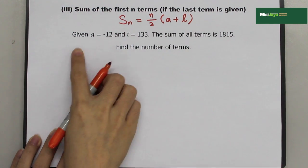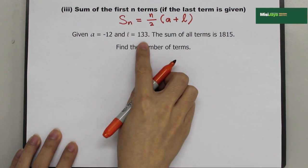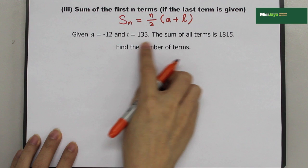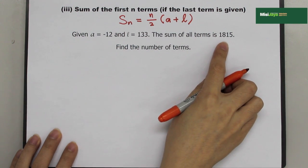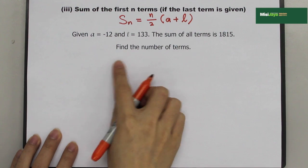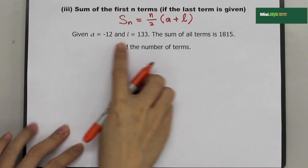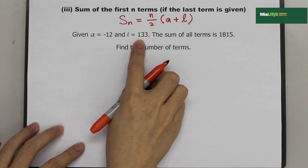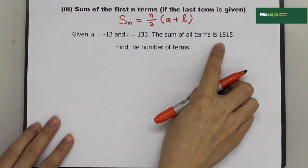Example: given A is negative 12 and L is 133, and the sum of all terms is 1815, find the number of terms. Here A and L are given, and SN is 1815.